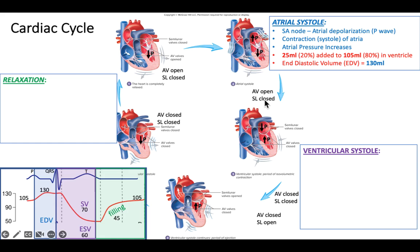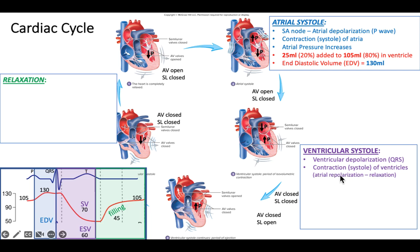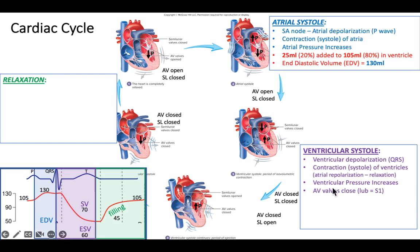We're at 130 milliliters. The AV valves are still open and the semilunar valves are closed. We're going to enter ventricular systole. We get the QRS — depolarization of the ventricles — which causes them to contract. We can see the little arrows showing the ventricles beginning to contract. When they begin to contract, the atria are going to be relaxing. We don't see atrial repolarization on an EKG, but it occurs at the same time as ventricular depolarization. So the atria relax, lowering pressure in the atria, while pressure in the ventricles rises — and that causes the AV valves to close. We hear that as the first heart sound, the 'lub' of the lub-dub.